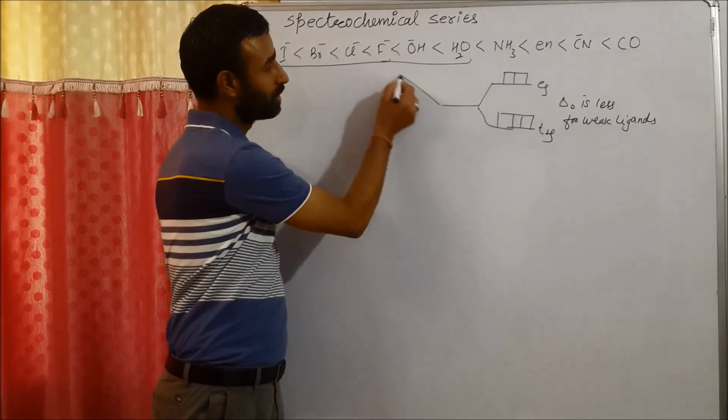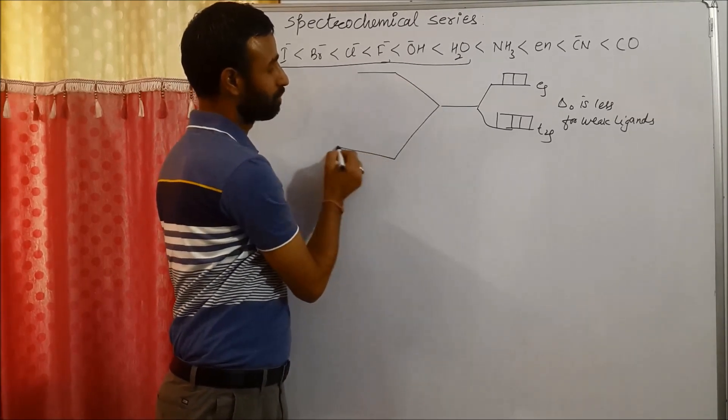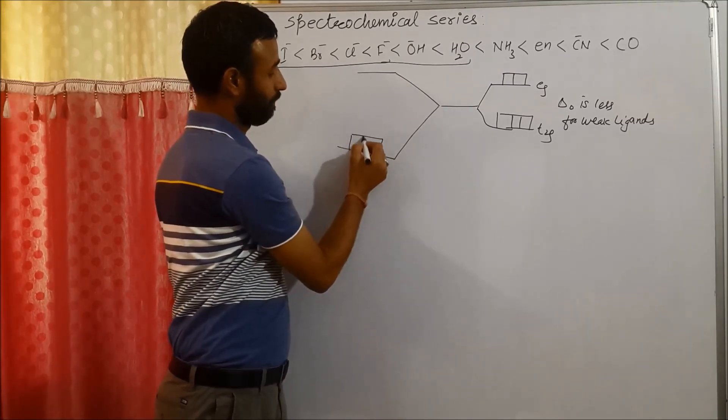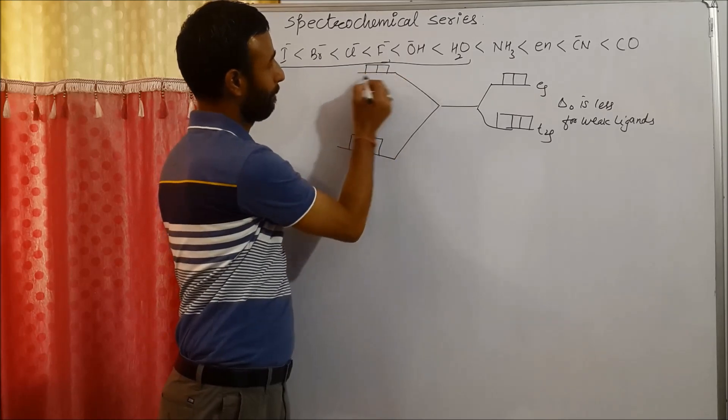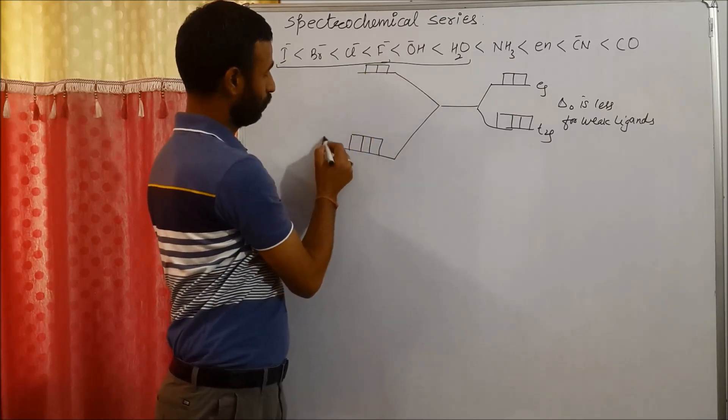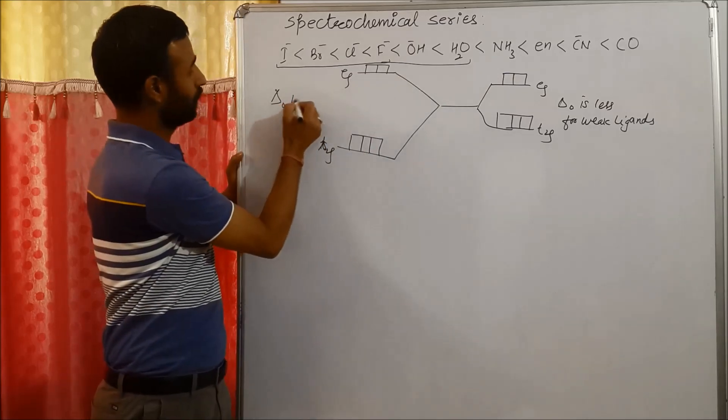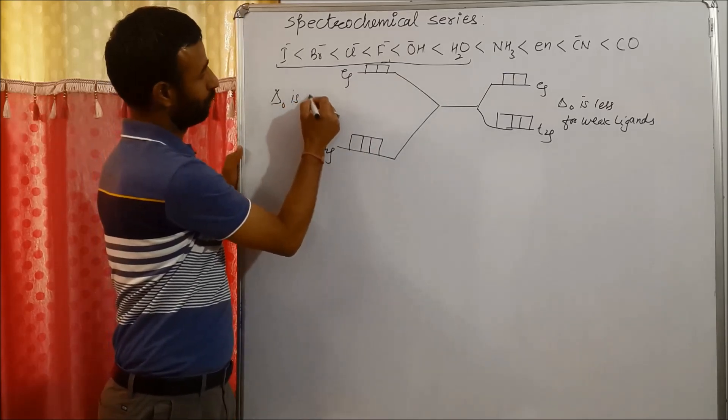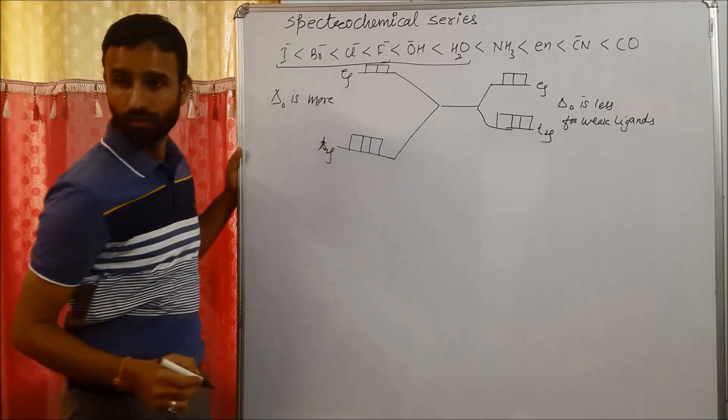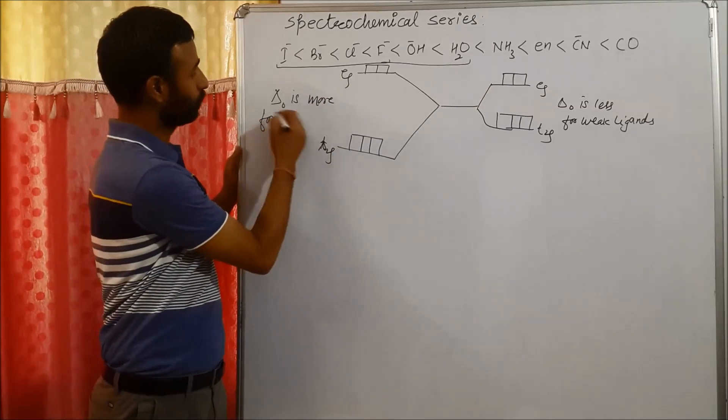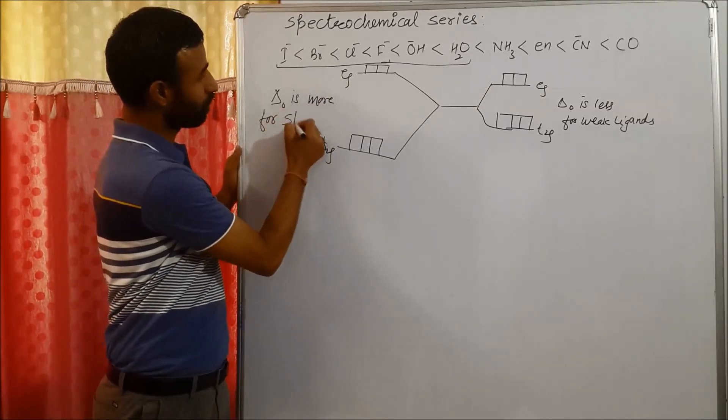And for strong ligands, splitting between T2G and EG, delta O is more. It is large for strong ligands.